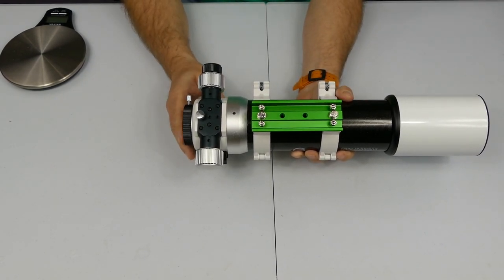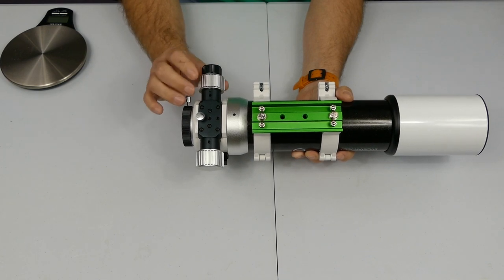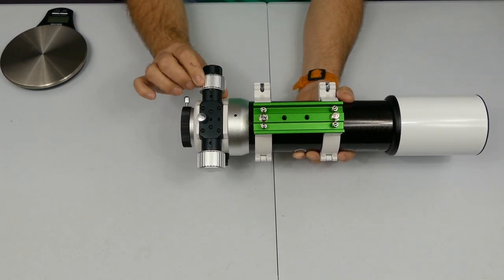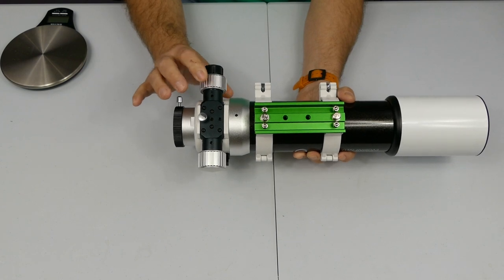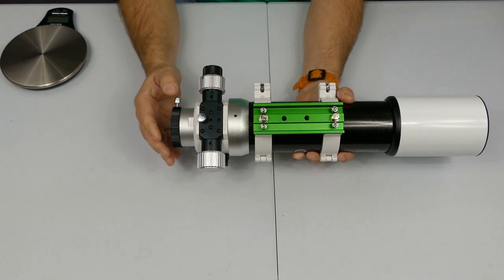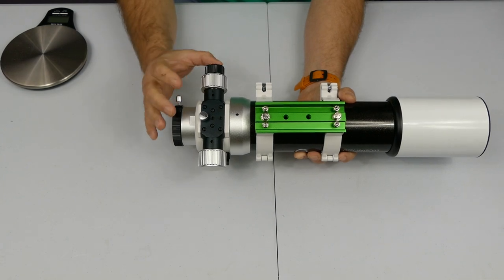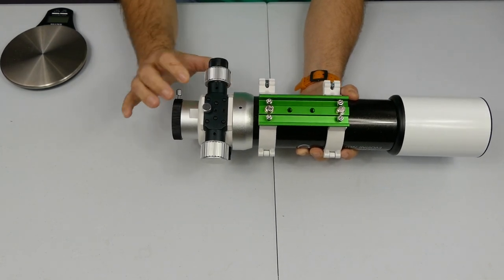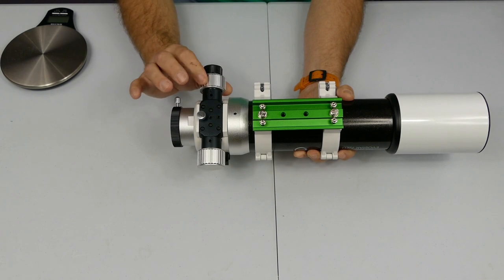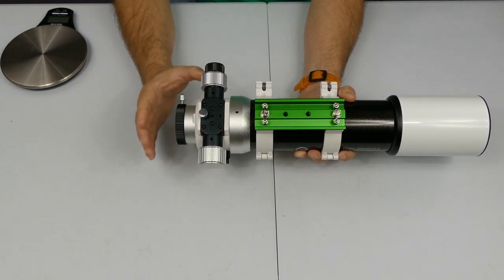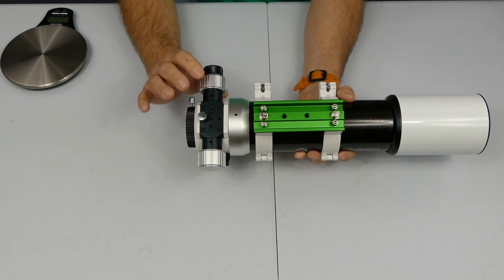The thing that's impressed me most at the beginning here before actually using it is the Crayford style focuser. As primarily an imager, I'm not a huge fan of Crayford focusers, but this has got an 11 to 1 dual speed Crayford focuser and it's really good. I'm really impressed with how smooth it is, how well it operates, and the fact that it just doesn't seem to slip. I think what Sky Watcher have done is they've bead blasted the flat of the focus tube and it's textured which gives it much more grip on the main focus shaft.